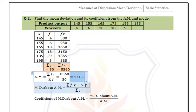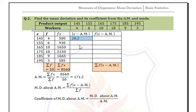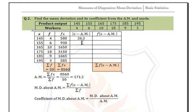Now we calculate |x - arithmetic mean| and then multiply by the corresponding frequency. For x = 145: 145 - 171.2 = -26.2, absolute value 26.2. For x = 155: 155 - 171.2 = -16.2, absolute value 16.2. We find the remaining values similarly.